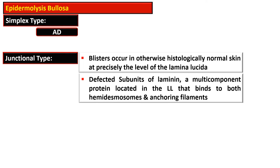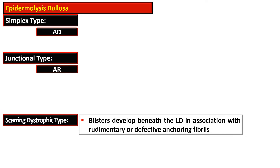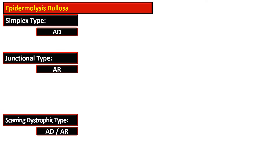In the junctional variety, the blister occurs in otherwise histologically normal skin, precisely at the level of the lamina lucida. It is due to a defective subunit of laminin, a multi-component protein located in the lamina lucida that binds to both the hemidesmosome and anchoring fibrils. Some cases are also associated with mutations in Bullous Pemphigoid Antigen 2. In the scarring dystrophic type, blisters develop beneath the lamina densa in association with rudimentary or defective anchoring fibrils, linked to mutations in the COL7A1 gene, and inherited as autosomal dominant or recessive. The mixed type has pathology at various levels.